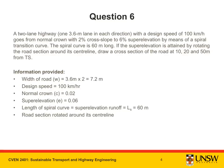Let's extract the required information from the question. We're told that each lane is 3.6 meters in width, therefore the width of the road is 3.6 meters times 2 because it's a two-lane highway. We're also told that the design speed is 100 kilometers per hour. The normal crown has a 2% cross slope and the super elevation is 6%. The length of the spiral curve is 60 meters and the road section is rotated around its center line.